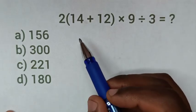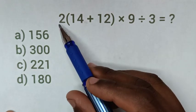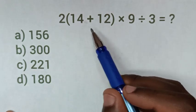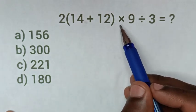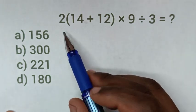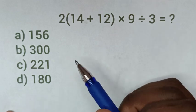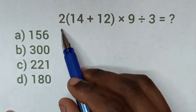Hello, you are welcome on how to solve this math problem, which is 2(14 + 12) × 9 ÷ 3. If you already have the answer, you can comment it in the comment section. Now, let's start to do this math problem.